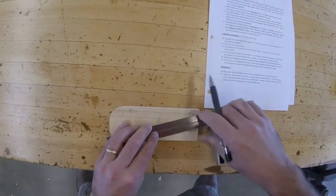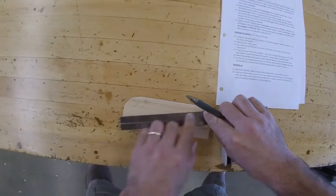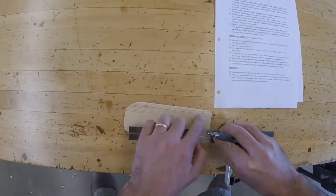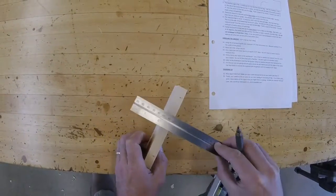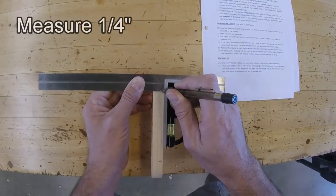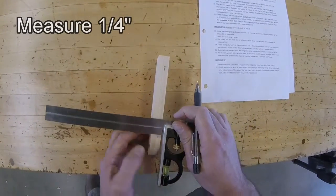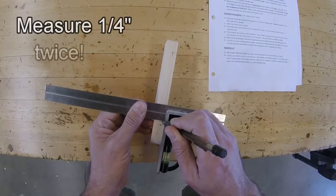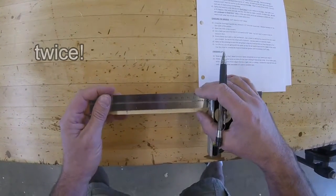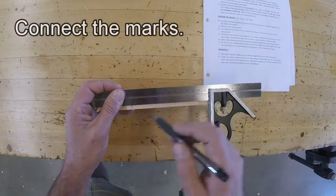Then I'll use the straight edge to connect those two. Some of you are going to try to shortcut and you'll just make one mark, and what ends up happening is this edge of the ruler goes on the mark, and this edge goes who knows where. You'll end up with a crooked line like that. Put a mark on both edges. The same thing here on the edge of the board. Make a mark at a quarter of an inch here, and a quarter of an inch here. And connect those two lines.